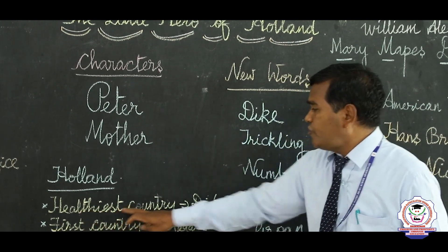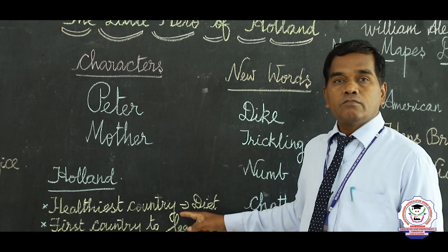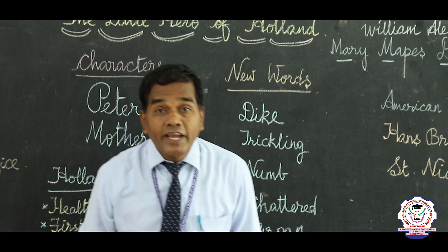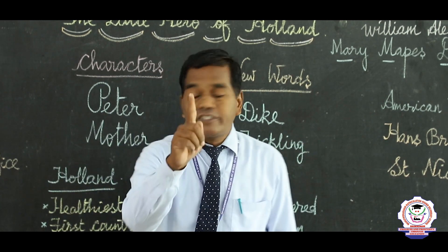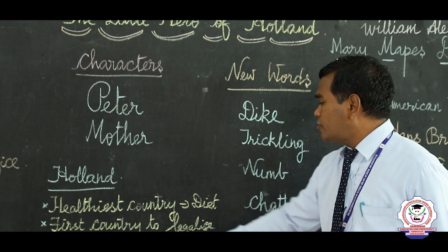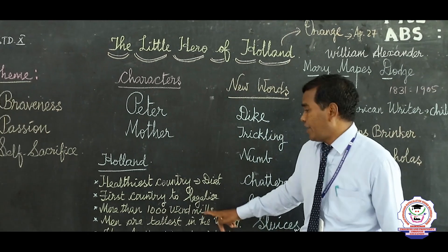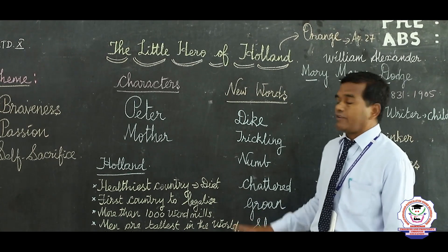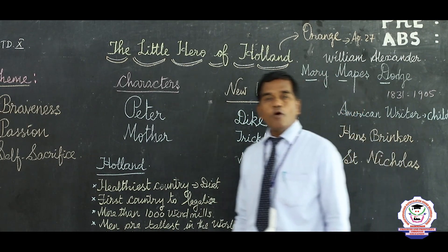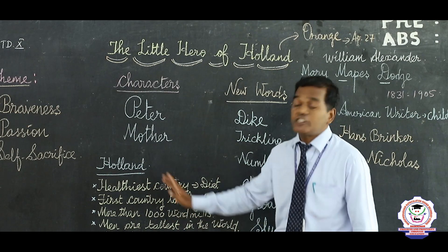First: Holland is the healthiest country in the world for diet — the Dutch people are the healthiest in diet. Second: Holland is the first country in the world to legalize same-sex marriage. Third: Holland has more than a thousand windmills. Fourth: Dutch men are the tallest in the world. Fifth: home birth is still cherished in Holland.